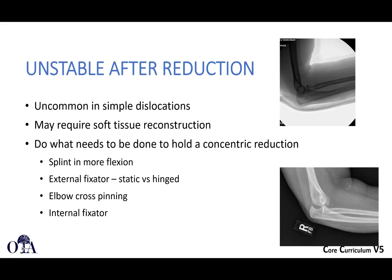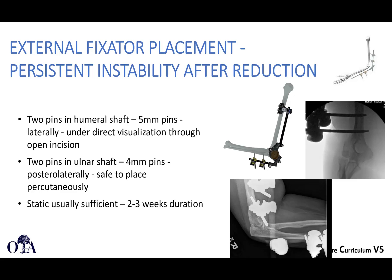For external fixation: place two 5mm pins in the humeral shaft under direct visualization through an open incision to protect the radial nerve. In the ulnar shaft, 4mm pins can typically be placed percutaneously. A static external fixator is used for two to three weeks, or a hinged external fixator can allow motion.